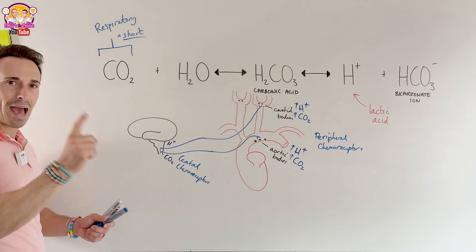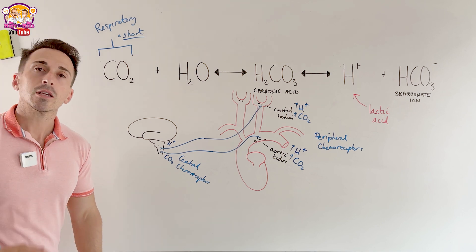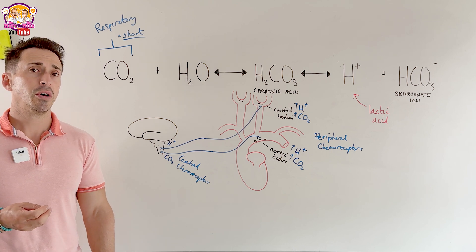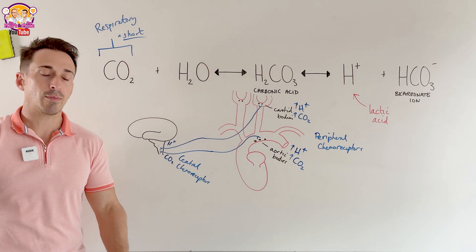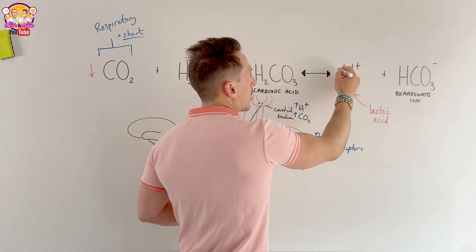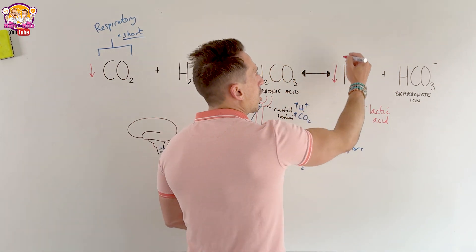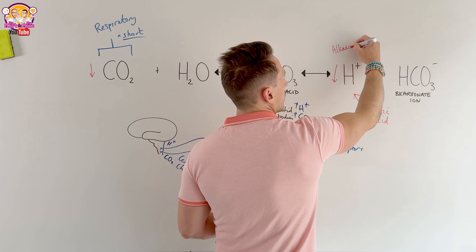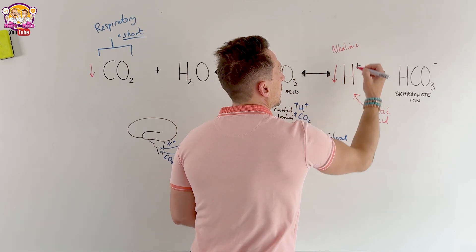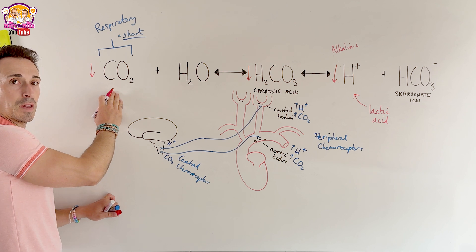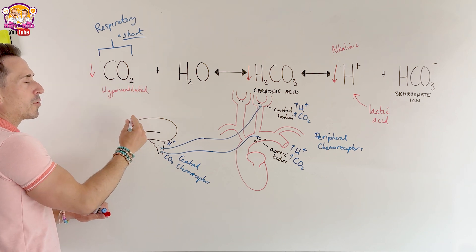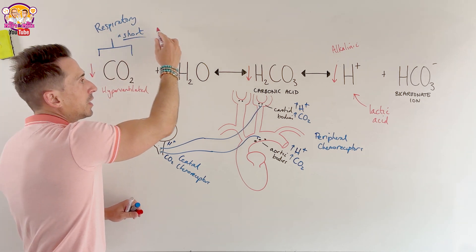If the respiratory system doesn't work properly — for example, an anxiety disorder causing hyperventilation — all of that CO2 is breathed out, dropping carbonic acid and hydrogen ions, making the blood alkaline. Because the cause is respiratory, this is called respiratory alkalosis.